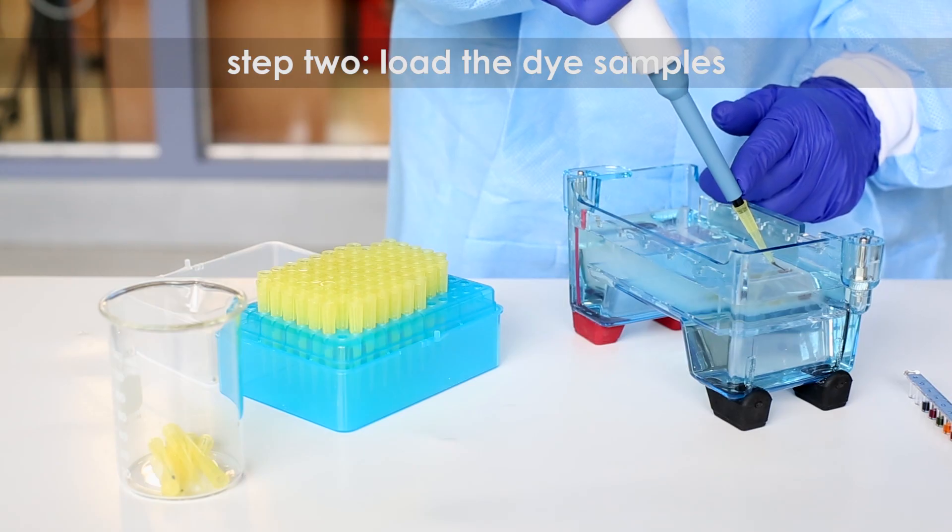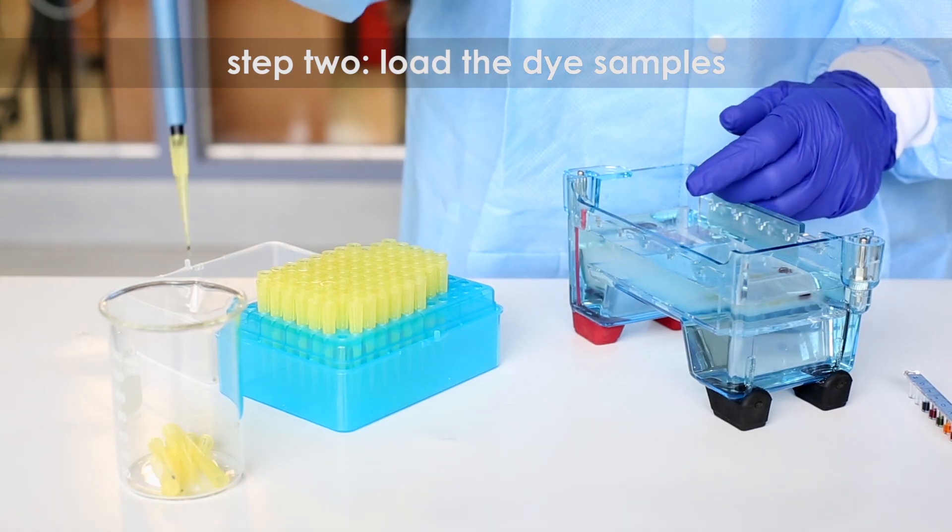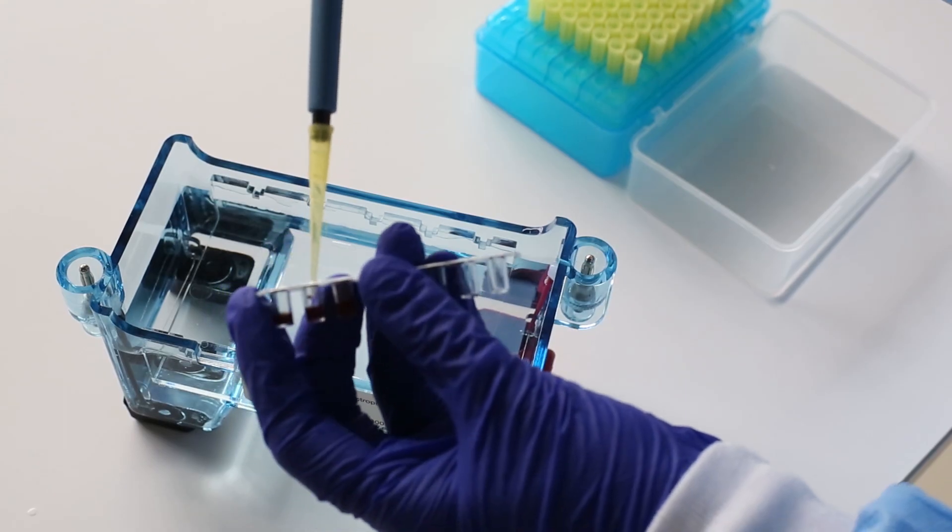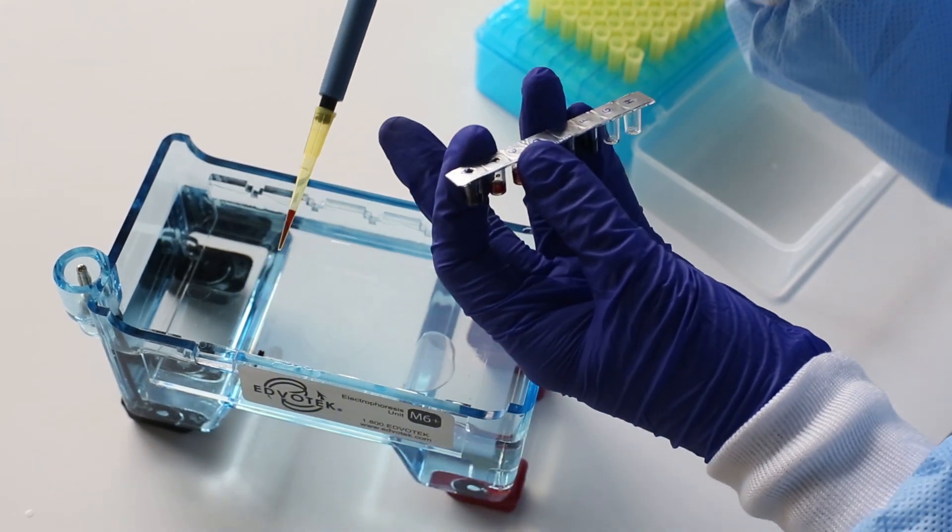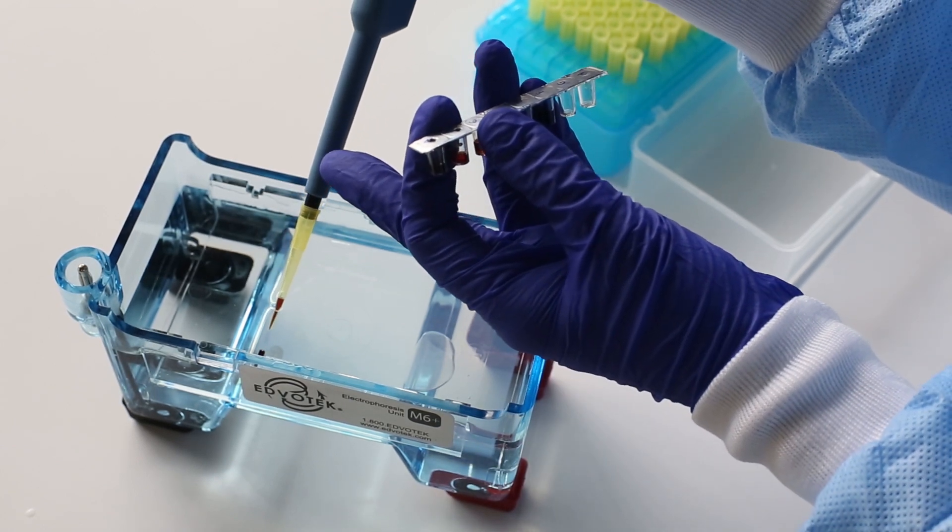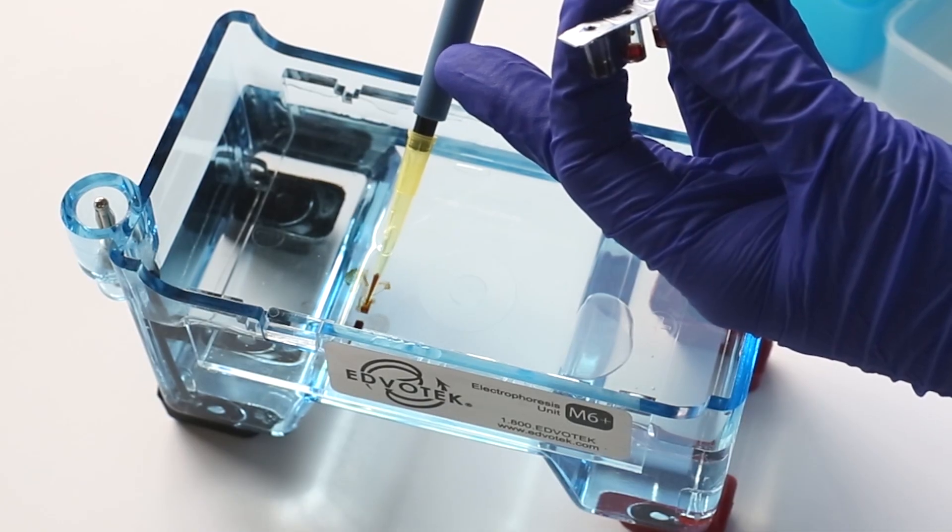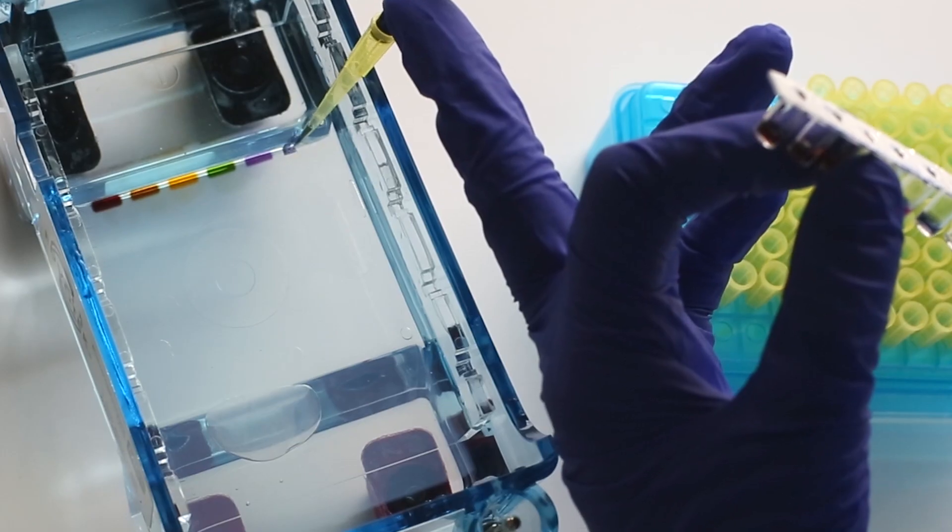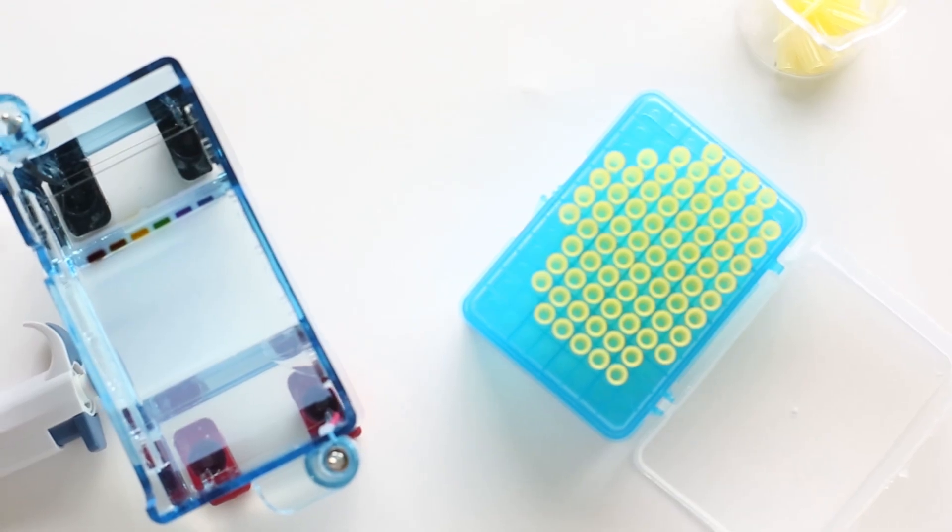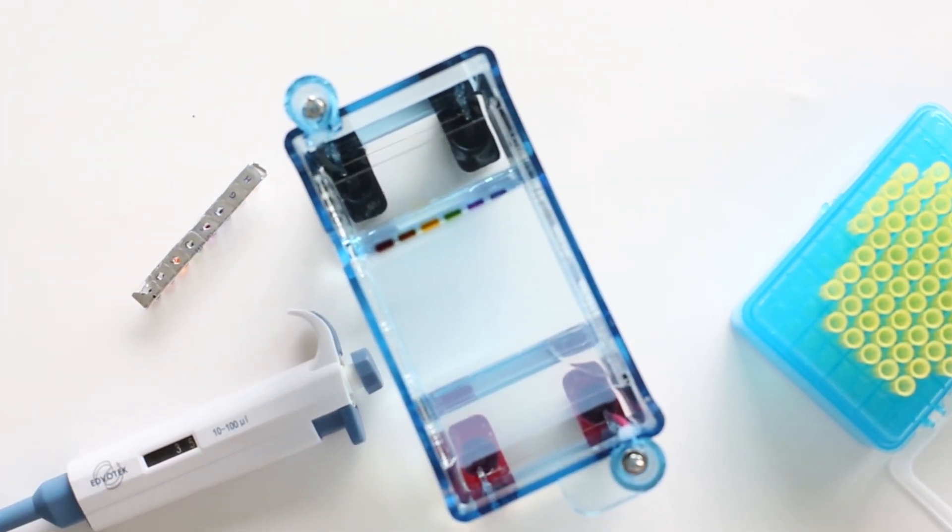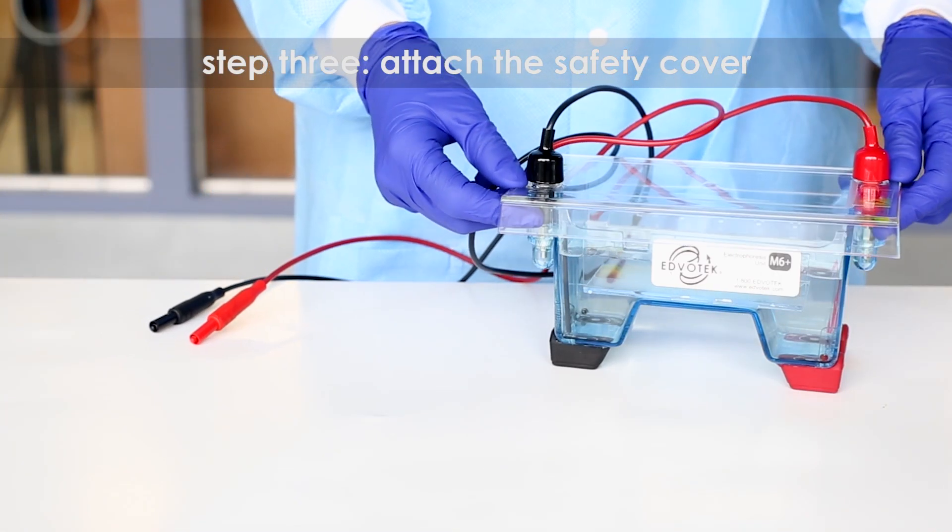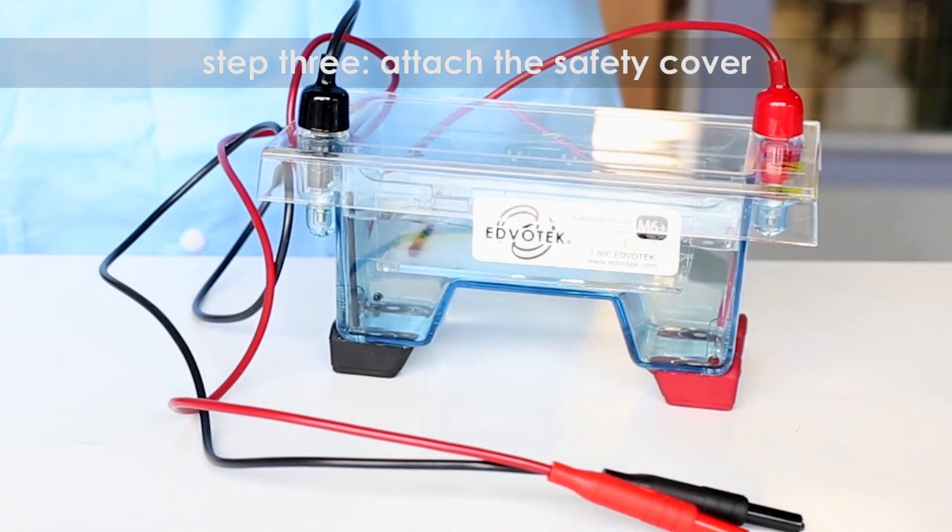Step three: place the safety cover and check that the gel is properly oriented. Remember, the dye samples will migrate toward the positive electrode.